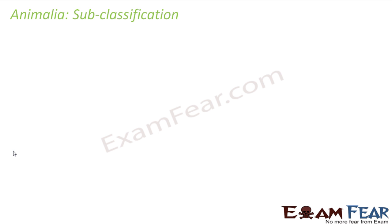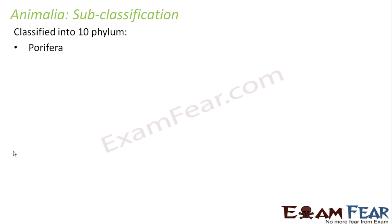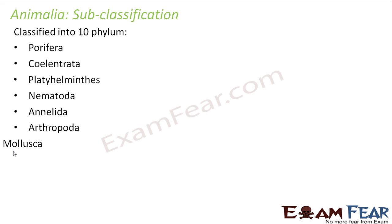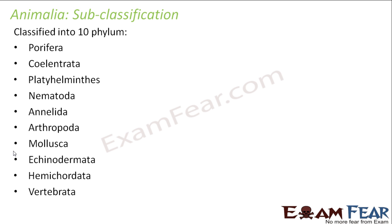Now let us look at the sub-classification of Kingdom Animalia. We will group this kingdom into different phyla to make it easier to study. It is classified into 10 phyla: Porifera, Coelentrata, Platyhelminthes, Nematoda, Annelida, Arthropoda, Mollusca, Echinodermata, Hemichordata, and Vertebrata.